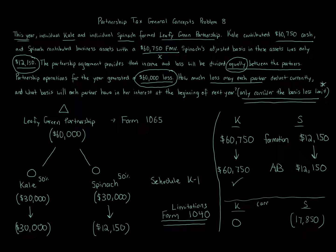The carryover works like this: if next year income is reported, Spinach is allowed to use that suspended loss because the income will increase basis, and then there will be enough basis to absorb the prior loss. You can continue to carry that loss forward going forward. It's better to use the loss immediately because of the time value of money — a dollar of tax savings today is worth more than a dollar a year from now — but at least you still get that benefit eventually.